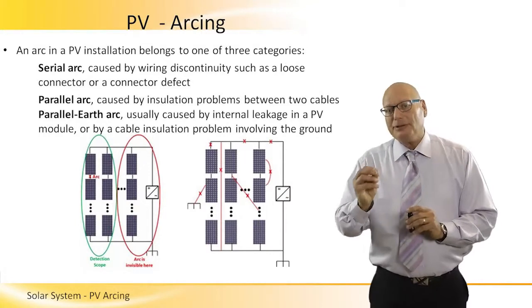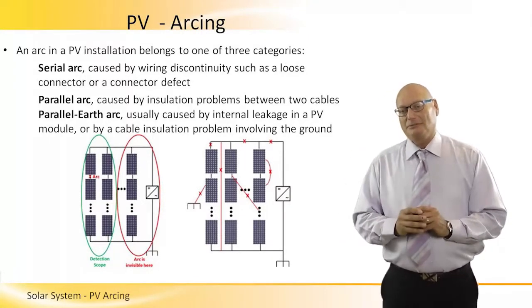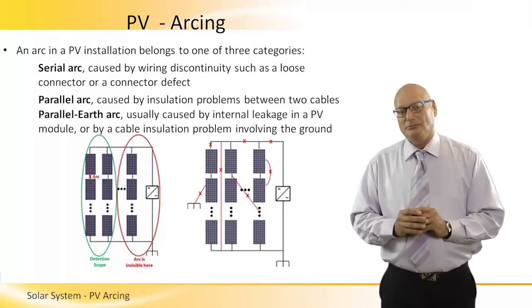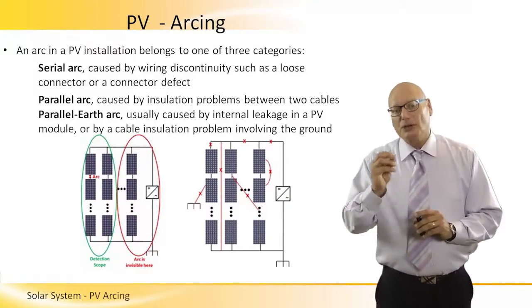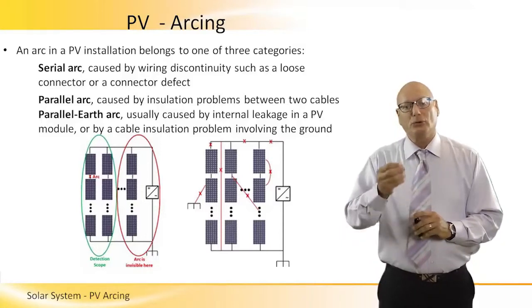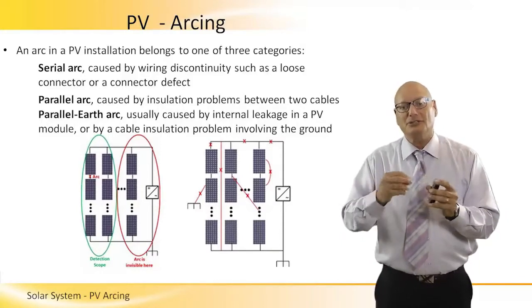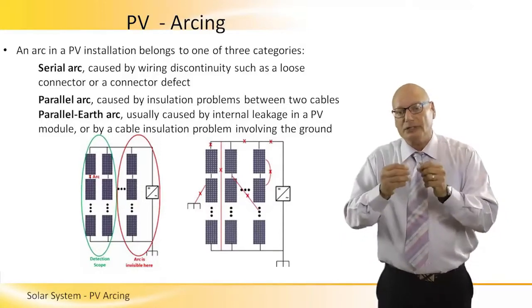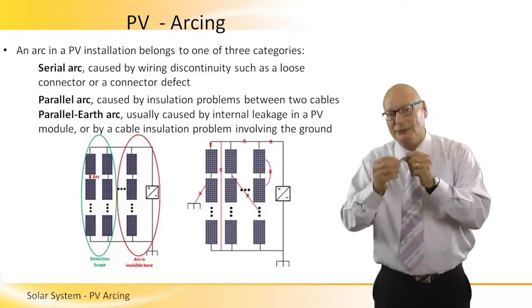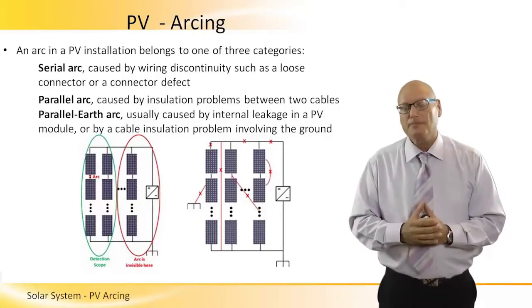There are three different types of arcs. The first is a serial arc, caused by wiring discontinuity such as a loose connector or connector defects.